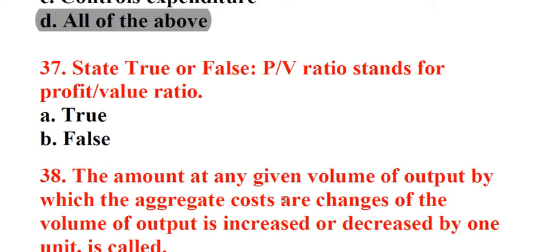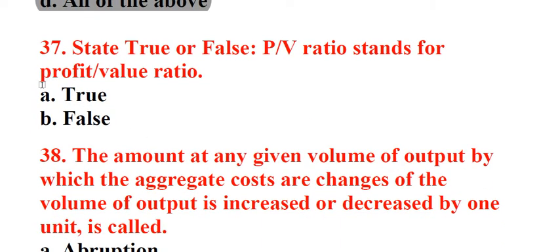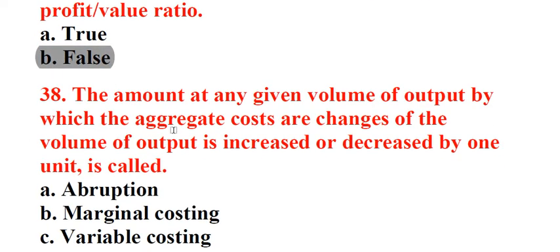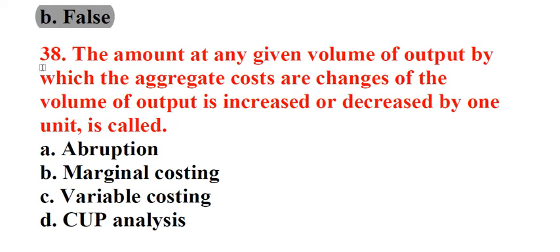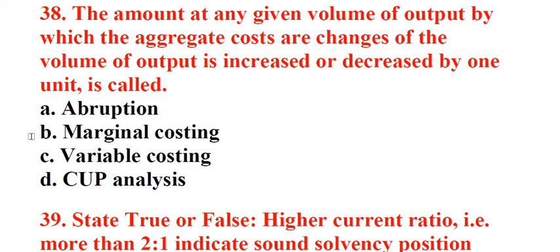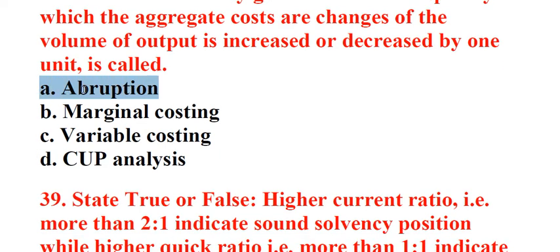Question 37: State true or false. PV ratio stands for profit slash value ratio. A. True, B. False. Answer: B. False. Question 38: The amount at any given volume of output by which the aggregate costs are changed if the volume of output is increased or decreased by one unit, is called. A. Absorption, B. Marginal costing, C. Variable costing, D. CVP analysis. Answer: A. Absorption.